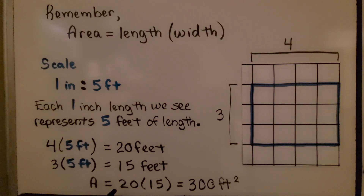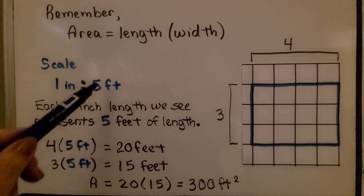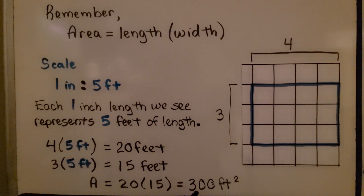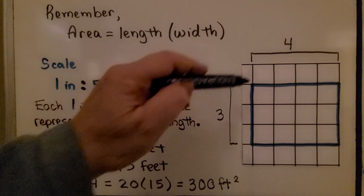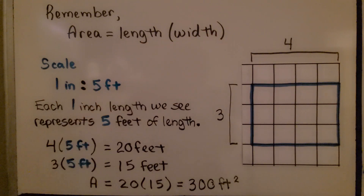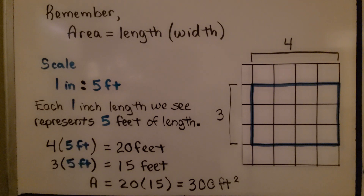The area of the actual rectangle in feet would be twenty times fifteen, which equals three hundred square feet. If we just used the drawing measurements, it would be four times three, which is twelve square inches.